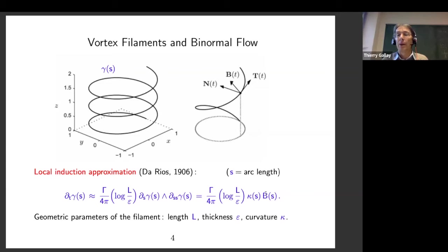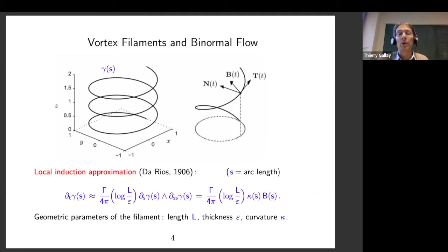Unfortunately, justifying this formula from the fundamental equations of fluid mechanics is an open question which looks very difficult, both in the inviscid case and in the viscous case. For the moment there are only conditional or partial results in some very specific settings, but no general justification of this motion. There is, however, a particular case which is much simpler — massively simpler — where you assume symmetry around some axis.